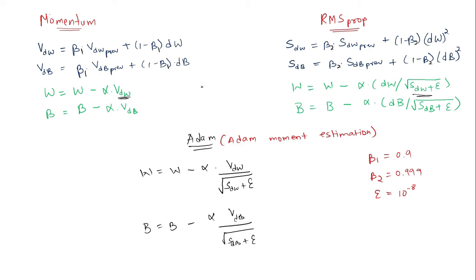As Adam is formed by combining two optimization algorithms, momentum and RMS prop, it has the advantages of both these optimization algorithms, and thus the resultant is better than momentum or RMS prop alone. Adam usually works better than momentum and RMS prop, and thus it is almost the best known optimization algorithm till now.